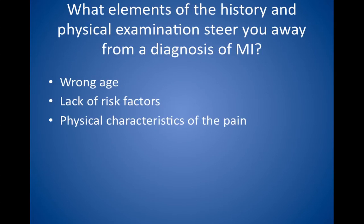First, wrong age. In the absence of known heart disease, strong family history, or multiple risk factors for coronary artery disease, a patient younger than age 40 is extremely unlikely to have an MI. Next, lack of risk factors. A 60-year-old marathon runner who eats well and has a high level of high-density lipoprotein and no cardiac risk factors other than age is unlikely to have a heart attack.